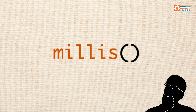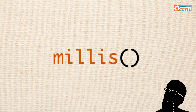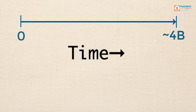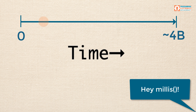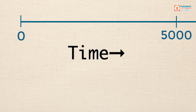So how can we conceptualize millis so that we can use it to create timed, repetitive events? Let's think of millis as moving along a timeline. The timeline starts at zero and goes all the way up to four billion and some change — these numbers represent milliseconds. At any point during our program, we can call the millis function and find out exactly where we are on the timeline. Let's zoom in and take a look at the first five seconds of a program.